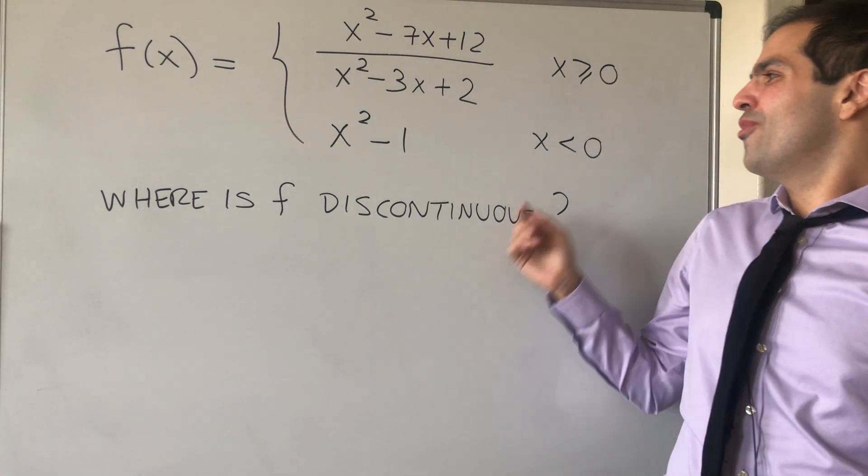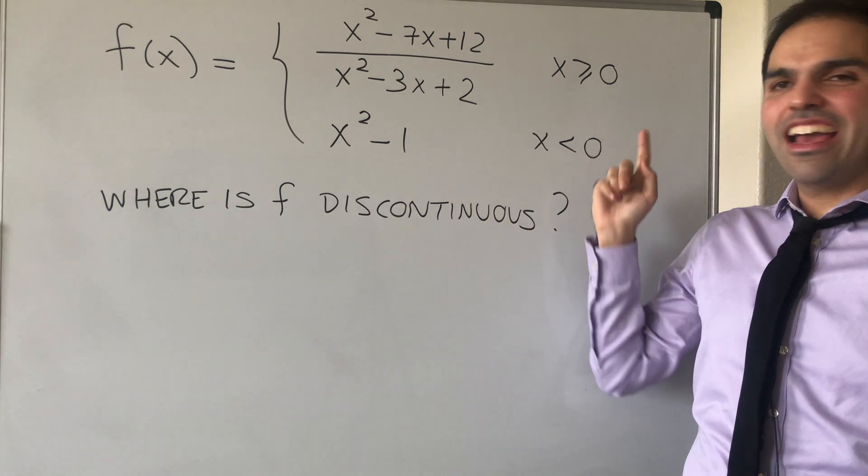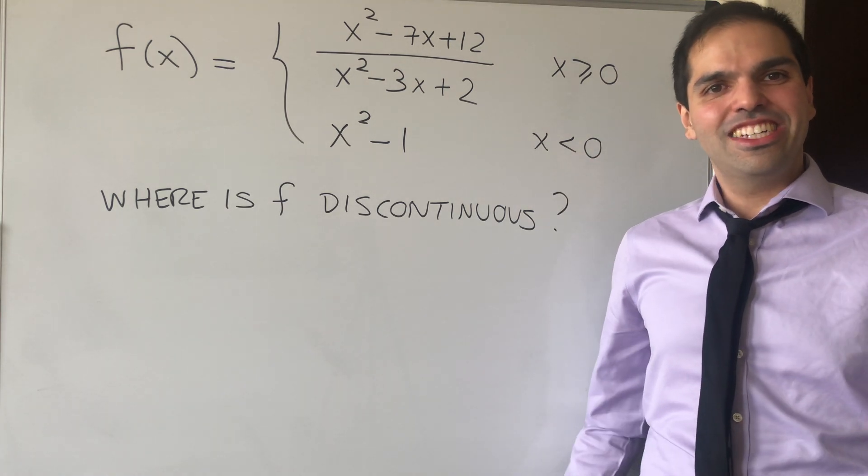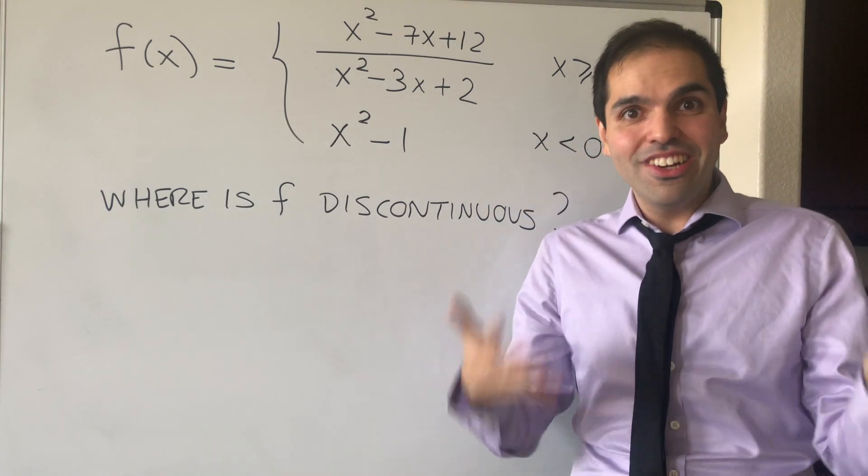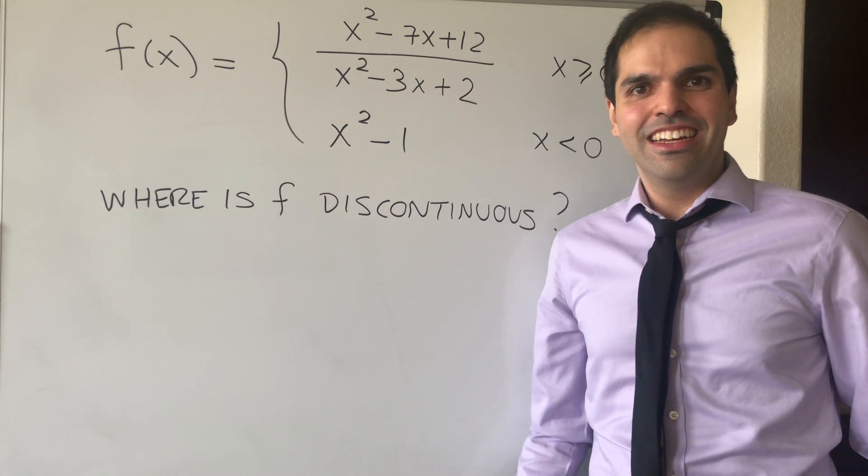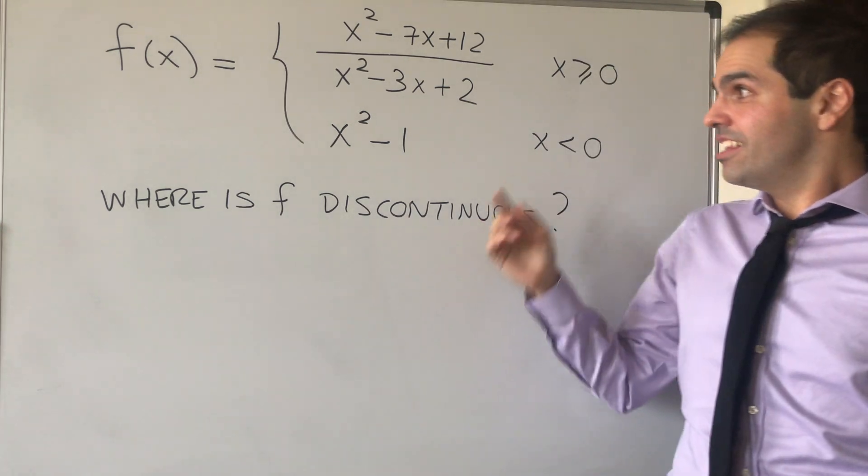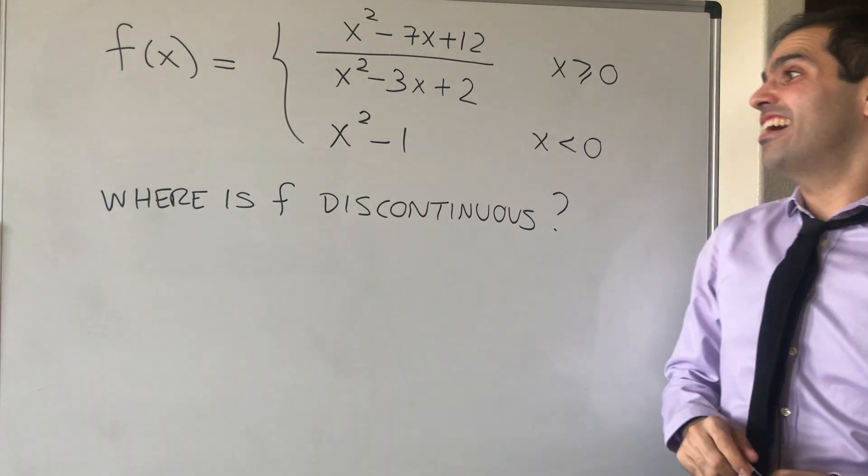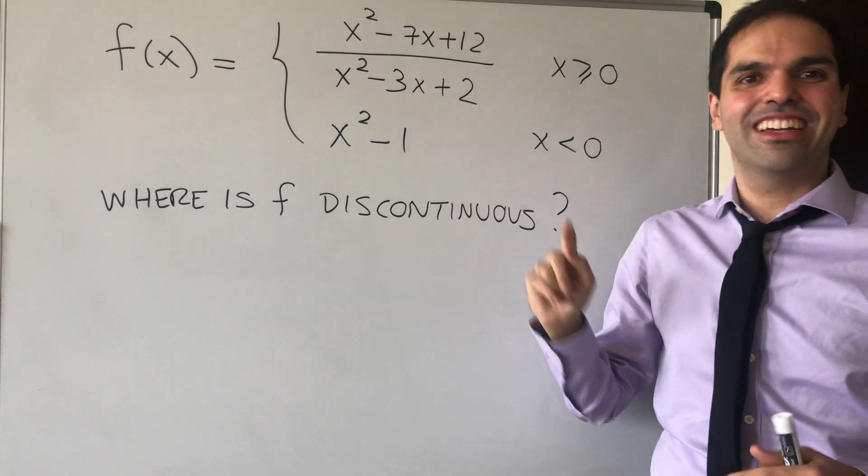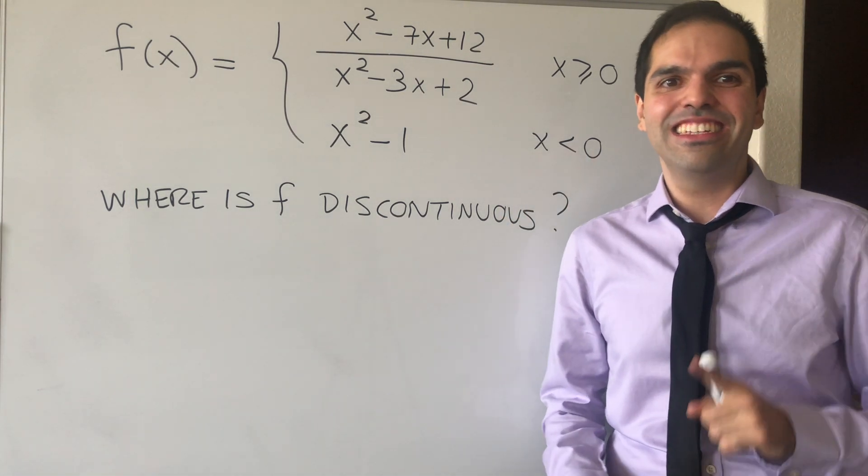And I told her, well, obviously the answer is just that x equals 0. And she was like, BPRP, you got it wrong as well. And I was like, no way. But it turns out, yes, I also got it wrong because there's a little trick in this problem. And let's see if you get it right.